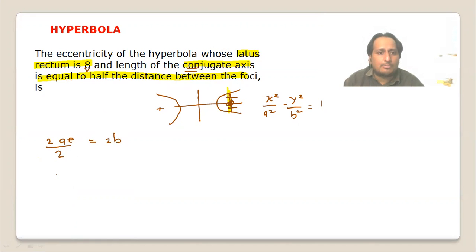So from this, 2b = ae, which gives us b = a/2. This is our first relation between a and b.